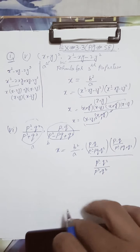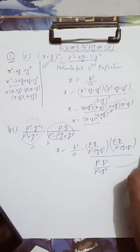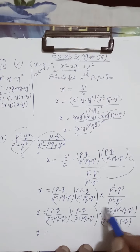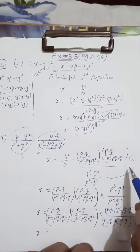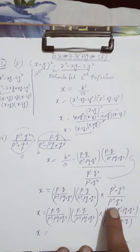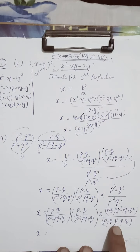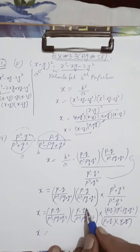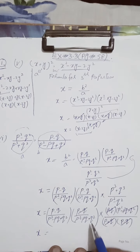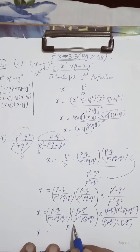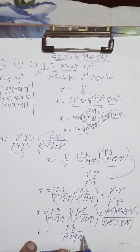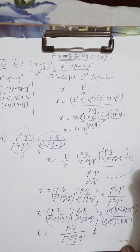Now p minus q cancels and the whole value cancels. In the numerator, the remaining value is p squared minus pq plus q squared. So this is the answer, students.